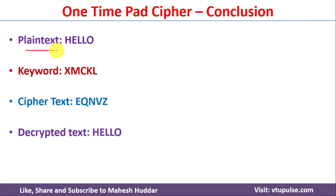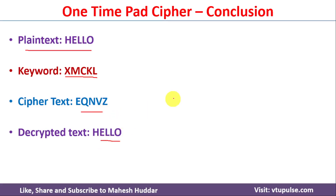To summarize: we started with plain text HELLO and keyword X M C K L. After encrypting, we got the cipher text E Q N V Z. After decrypting, we recovered the original plain text HELLO. I hope the concept of one-time pad cipher is now clear.